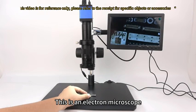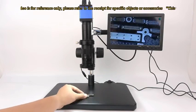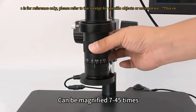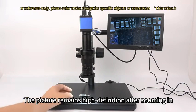This is an electron microscope. Objects can be observed through the screen display in real time. Can be magnified 7 to 45 times. The picture remains high definition after zooming in.